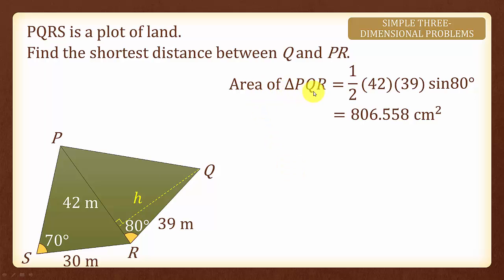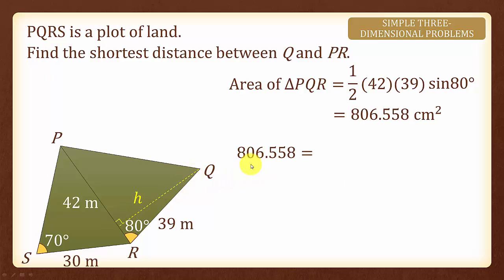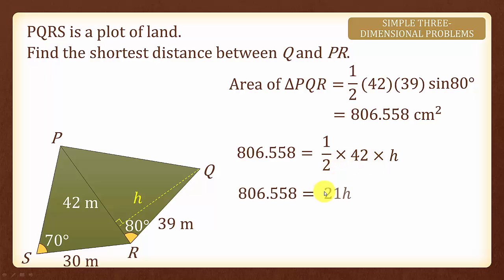Previously, we found the area of triangle PQR equals to 806.558 using the formula half AB sine C. Since we are finding the perpendicular height H, we can also write 806.558 equals to half times base 42 times the perpendicular height H, simplifying to 21H. Dividing both sides by 21 gives us H equals to 38.4 cm, rounded off to 3 significant figures.